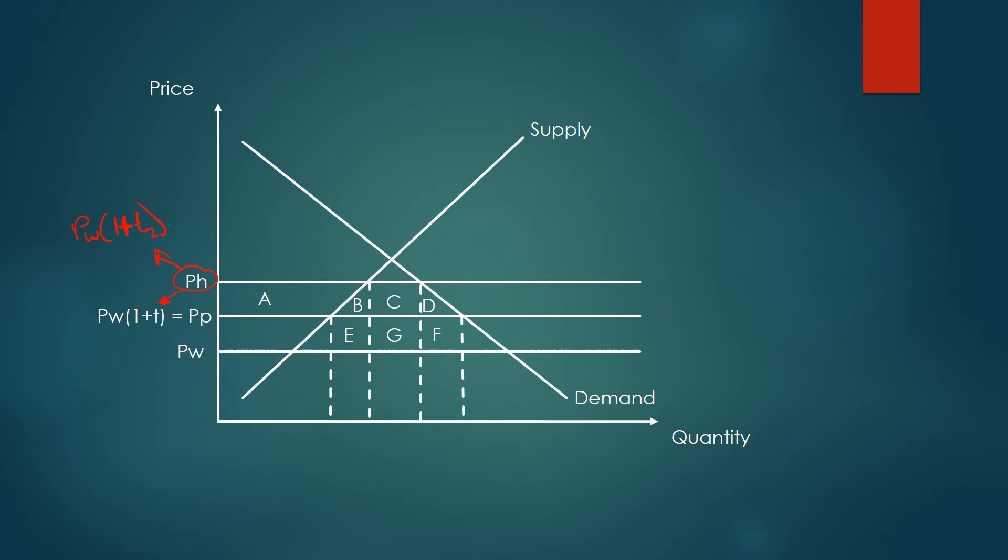We're also going to say for convenience that the partner country price PP equals PW1 plus T. So those two prices are the same, and we're going to look at which is better for welfare. If we assume that both price reductions are the same, what's better for welfare: a customs union or a unilateral reduction in tariffs?